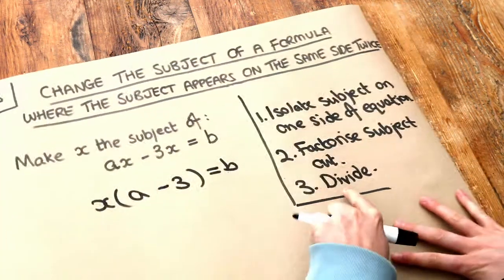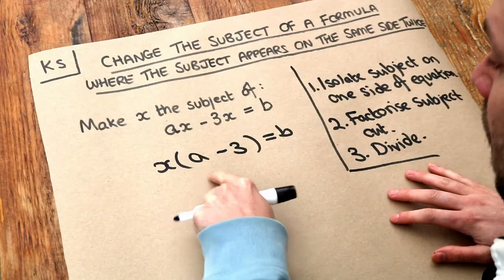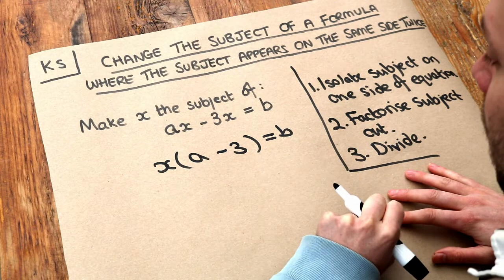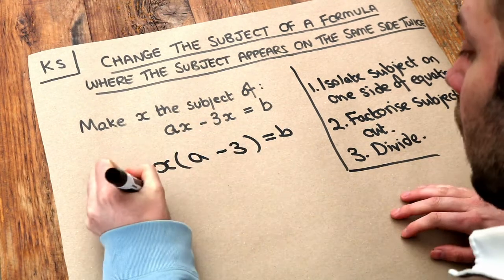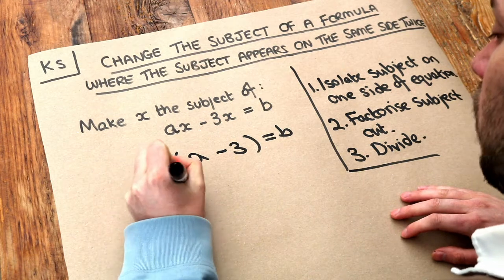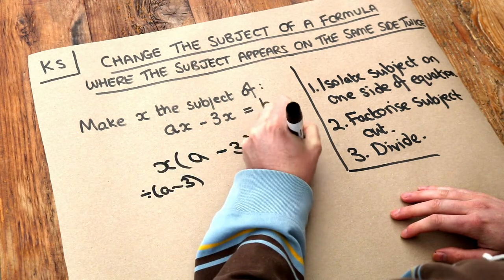Then we do step three, we just divide. x has been multiplied by a minus 3, so to get x on its own, we just need to divide both sides by that bracket of a minus 3.